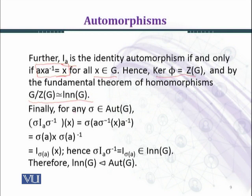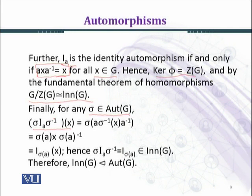Now, finally, for any σ belonging to Aut(G), we consider σ I_a σ⁻¹(x). We want to establish that Inn(G) is a normal subgroup of Aut(G). To establish this, we need to show that σ I_a σ⁻¹ should belong to Inn(G), where σ belongs to Aut(G).